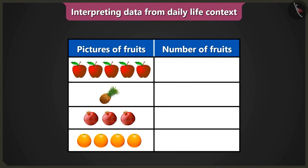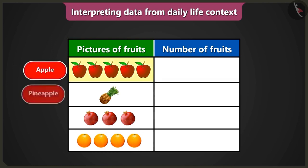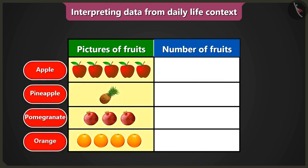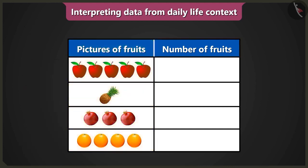How is that? Look. Which pictures are there in the column of fruits in the table? There are pictures of apple, pineapple, pomegranate, and orange. Now have you understood that the data given is about which fruits? But how will I know the number of fruits without counting them?